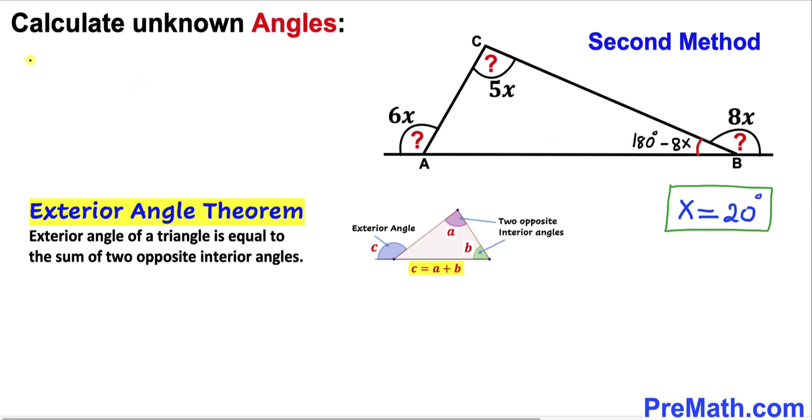Therefore the sum of these two opposite interior angles, 180 degrees minus 8x, and then plus 5x, equal to this exterior angle 6x.